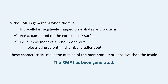To summarize: the resting membrane potential is generated when intracellular negatively charged phosphates and proteins are present, Na+ sodium has accumulated on the extracellular surface, and there is equal movement of potassium — one in, one out, electrical in, chemical out. These characteristics make the outside of the membrane more positive than the inside, and this is the point at which we have generated resting membrane potential.